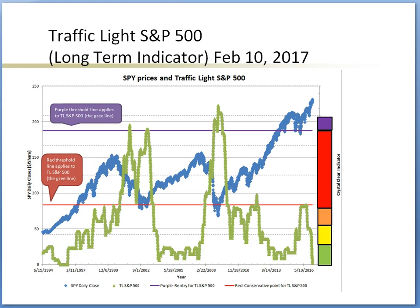Traffic Light S&P 500 is a long-term indicator. Here's the overview at the end of February 10, 2017. The full range of data is shown for this episode because it is the second time in history the traffic light reached the bottom. Last time was in about 1995, and right now it has reached all the way to the bottom. The X axis represents time — the oldest period is on the left, the latest period is on the right.